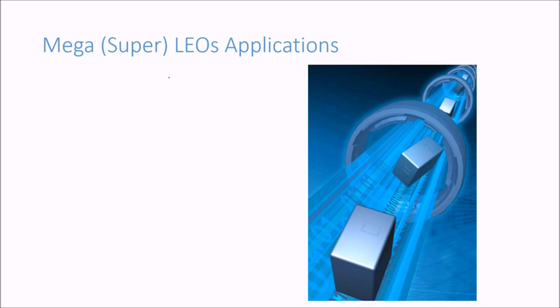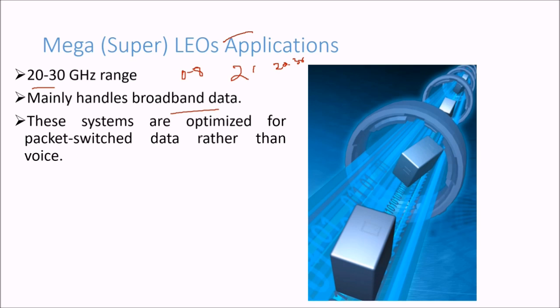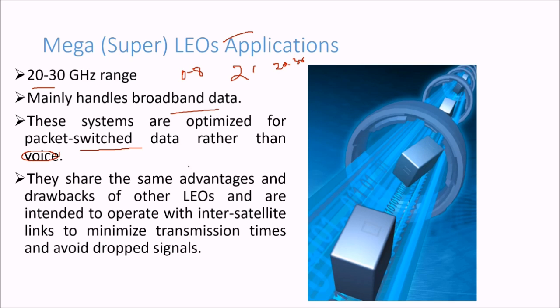Then we also have mega or super LEO applications. This is from 20 to 30 gigahertz. We started with 0.8, came to 2, and then to 20 to 30. Mainly handles broadband data. These systems are optimized for packet switched data rather than voice. They share the same advantages and drawbacks of LEOs and are intended to operate with inter-satellite links to minimize transmission times and avoid dropping signals.